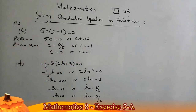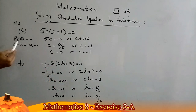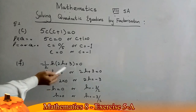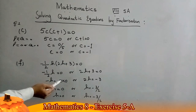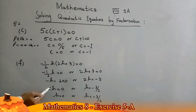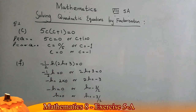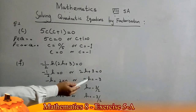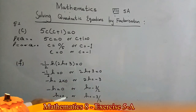Question 1, Part (f): (−1/2)h(2h + 3) = 0. Using the zero product principle, either the first factor equals 0 or the second equals 0. Multiplying through, we get h = 0, or 2h + 3 = 0, giving 2h = −3, so h = −3/2. The solution of the given equation is h = 0 or h = −3/2.